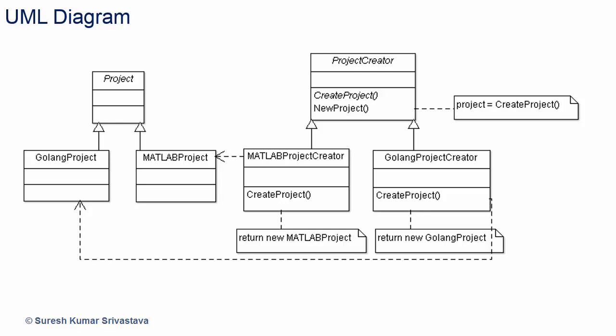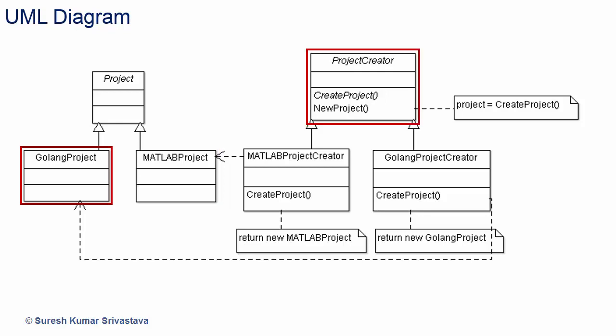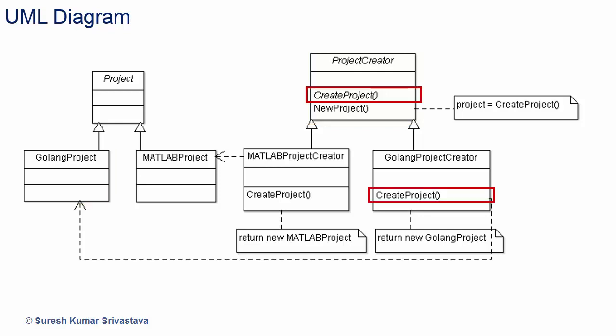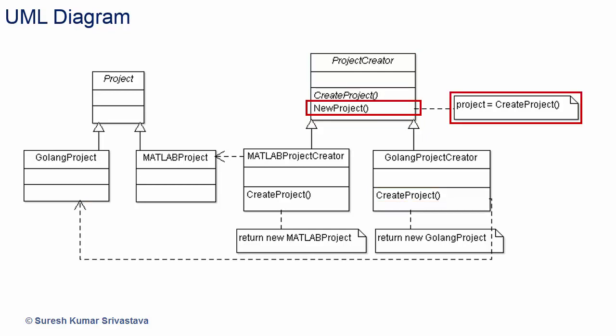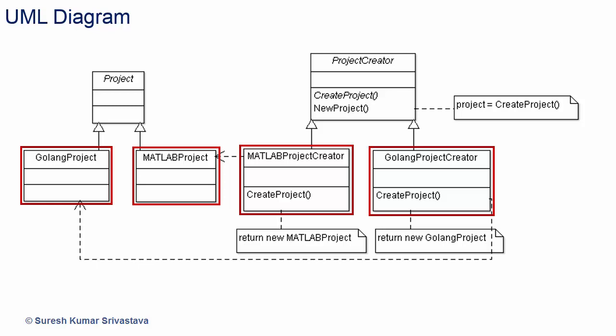I have created a UML diagram for this. The classes Golang project and MATLAB project are derived from abstract class Project. Suppose the ProjectCreator class wants to create a new project which is an object of Golang project. It has an abstract method create project which is implemented in the derived class Golang project creator. New project method calls create project method. So create project method of class Golang project creator instantiates the object of class Golang project and returns it to new project. We can see the subclass has instantiated the object of a class which was known later only. We have a parallel class hierarchy here, which can be very useful in a lot of scenarios.